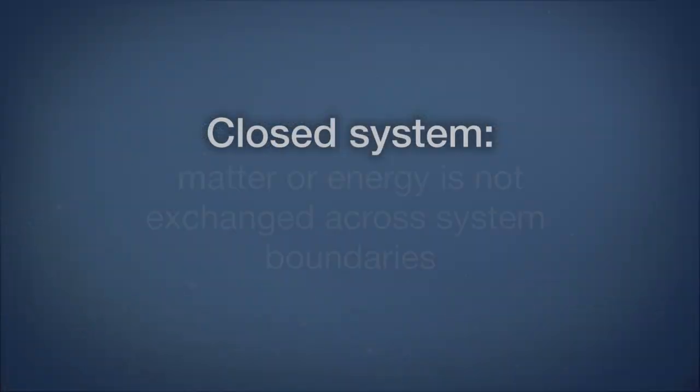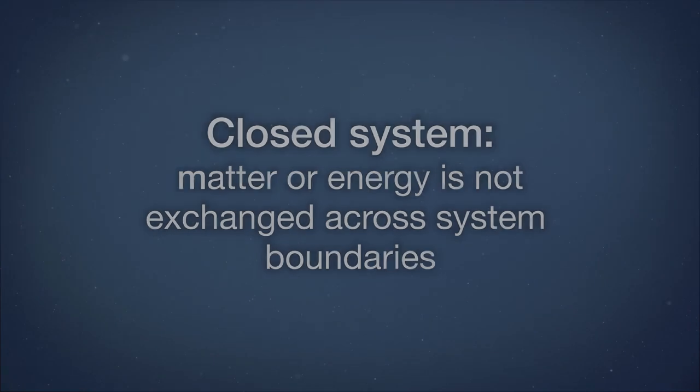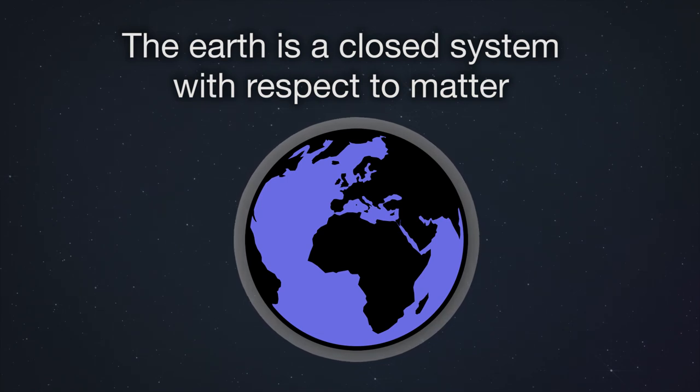In a closed system, matter and energy exchange do not occur across system boundaries. Closed systems are less common. The Earth is a closed system with respect to matter. Very little matter comes into our atmosphere and very little leaves to space.